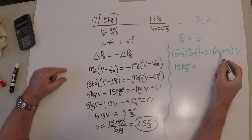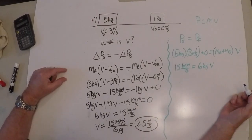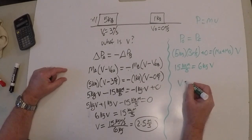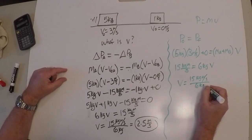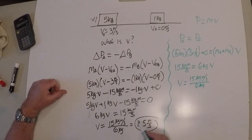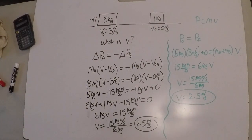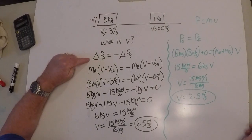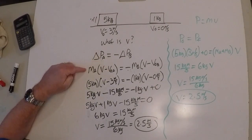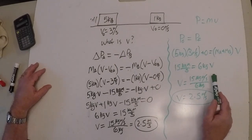So: 15 kilogram·meters per second plus zero equals (5 kilograms plus 1 kilogram), which is 6 kilograms, times V. Dividing both sides by 6 kilograms gives 15 kilogram·meters per second over 6 kilograms. The kilograms divide out — and in fact this is the same expression as before, giving the same answer: 2.5 meters per second. So there are two ways to approach this problem. One is based on the fact that impulses and changes in momentum are opposite. The other is recognizing that the momentum of the system doesn't change, so you write out momentum before and after and solve for V.